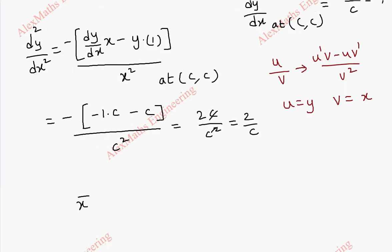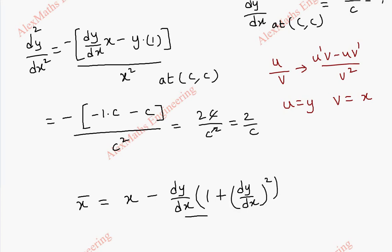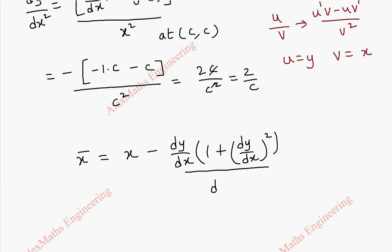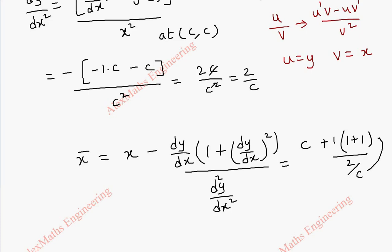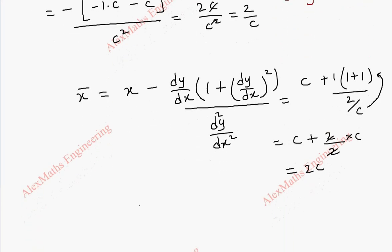Now we find x̄ using the formula x̄ = x − (dy/dx · (1 + (dy/dx)²)) / (d²y/dx²). Substituting x = c, dy/dx = −1 (so the negative makes it +1), and (1 + 1) = 2 in the numerator, divided by 2/c. Carrying c to the numerator gives c + (2·c)/2 = c + c = 2c.